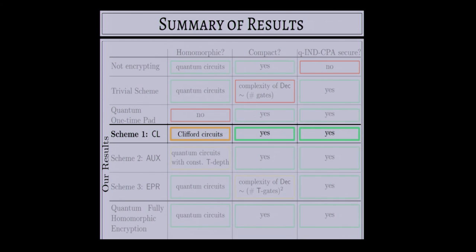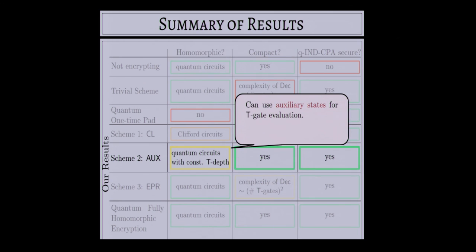Our other two schemes are extensions of this. For our second scheme, we provide auxiliary quantum states as part of the evaluation key to help with T-gate evaluation. But for T-gate depth L, we need N^{2^L} auxiliary states, so the key size grows exponentially in the T-gate depth.